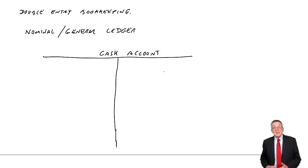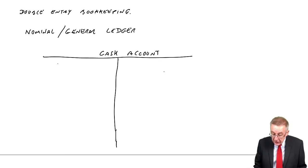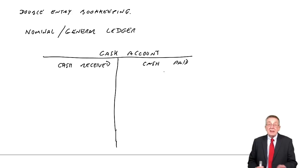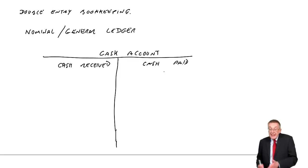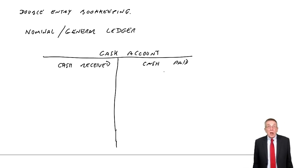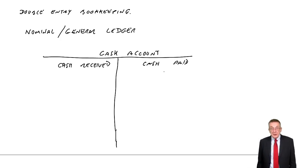We have two pages. We'll use the left-hand page to record cash received, and the right-hand page to record cash paid. When you receive cash, put it on the left; when you pay cash, put it on the right. It was invented by a monk called Pacioli a long time ago — he decided to put receipts on the left and payments on the right, and everybody's carried on doing it the same way.